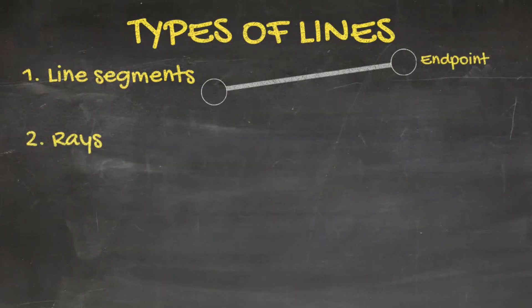Next, we will discuss rays. Rays are lines with only one endpoint. It infinitely extends from the other side of the endpoint.